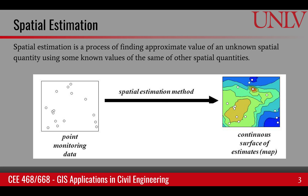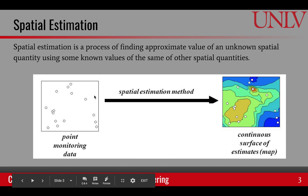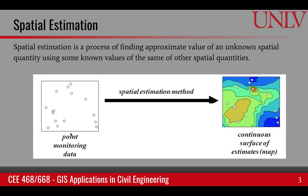What is spatial estimation? It is a process of finding the approximate value of an unknown spatial quantity using some known values of the quantity at other places, or known other quantities at other places. For example, we have some point data which we went out and collected, and the process of spatial estimation helps us create a continuous surface by estimating values at points where we did not make a measurement.